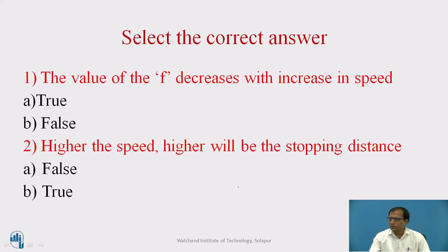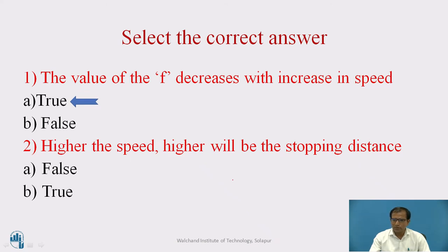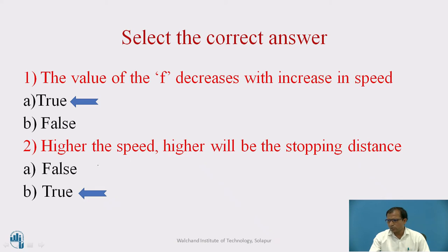Now pause and try to answer this question: Does the value of f decrease with increase in speed — true or false? And does higher speed result in higher stopping sight distance? The correct answer is: the value of f decreases with increase in speed, because at higher design speeds the friction coefficient f decreases. And for higher speeds you need a longer distance to stop the vehicle, so that statement is also true.